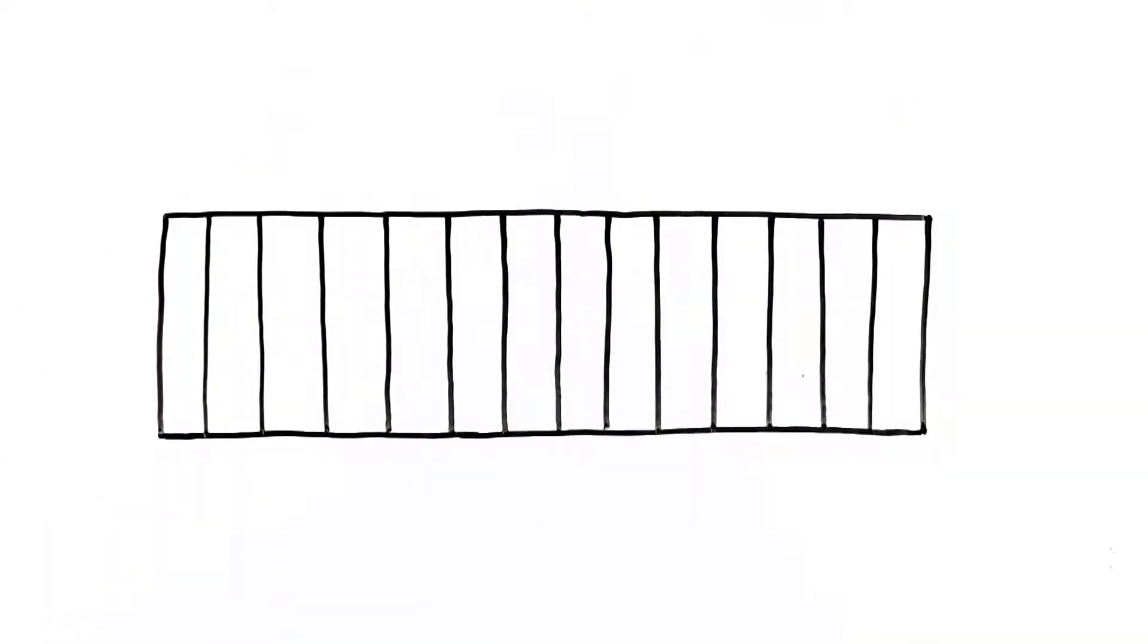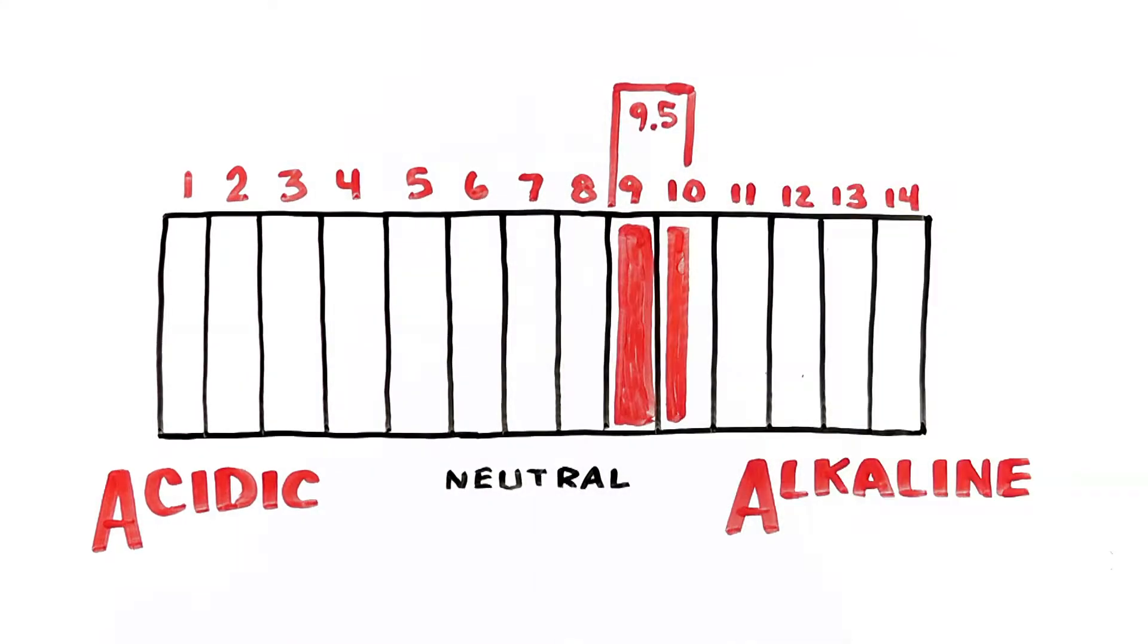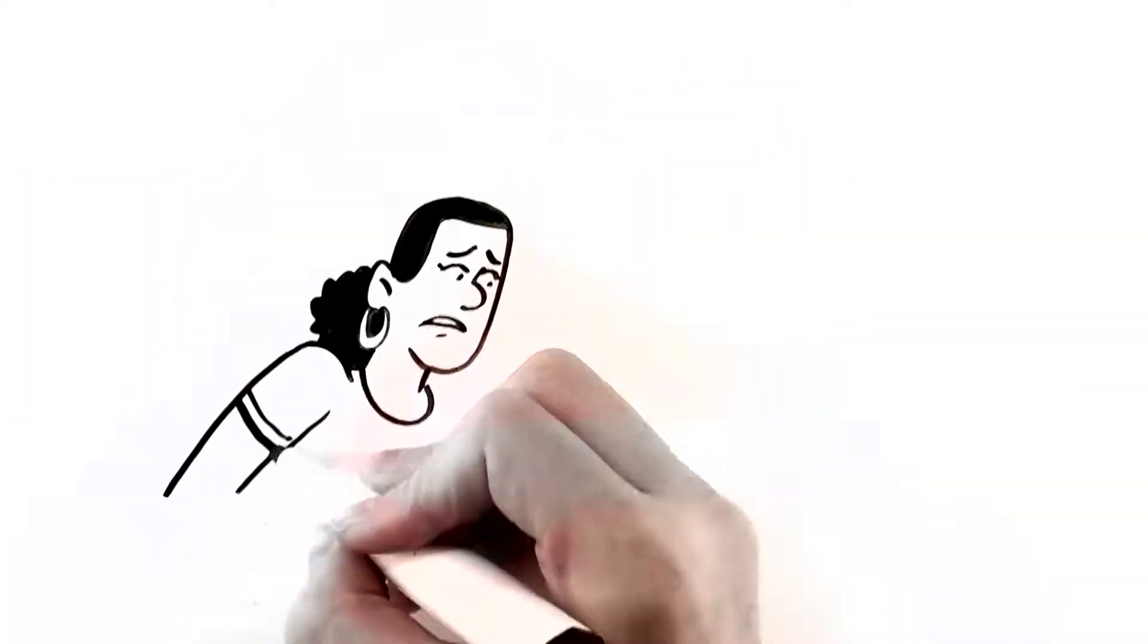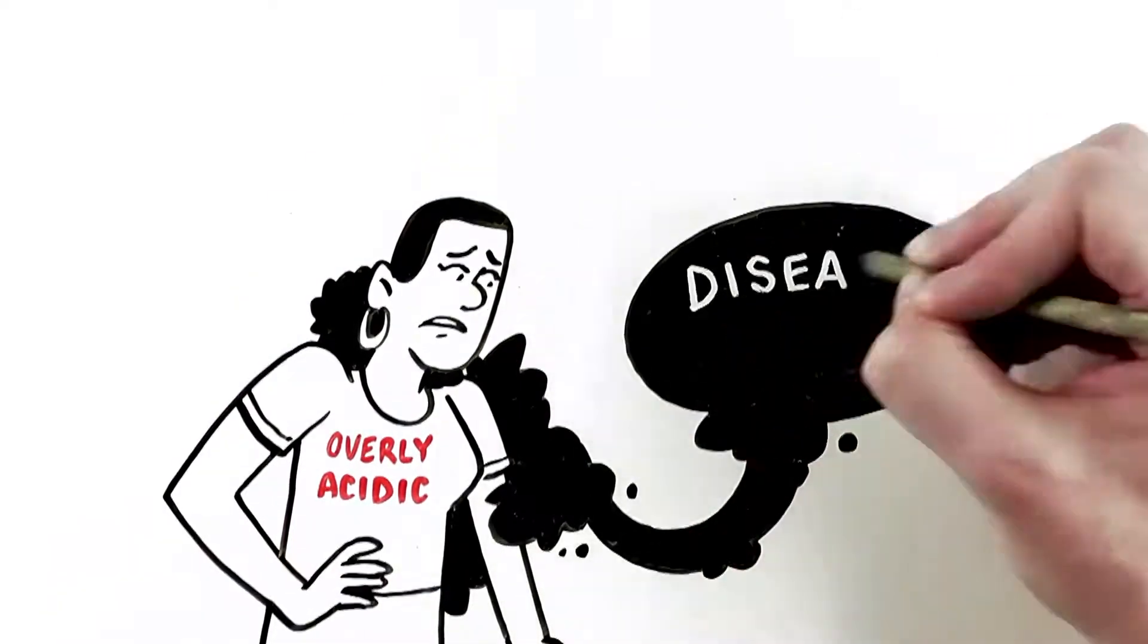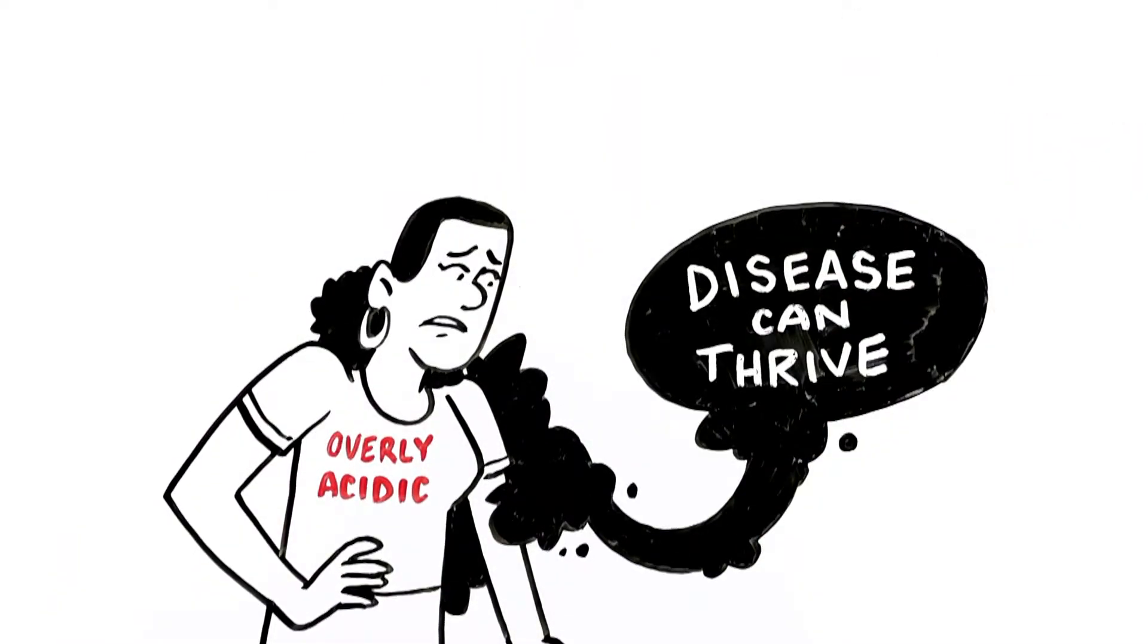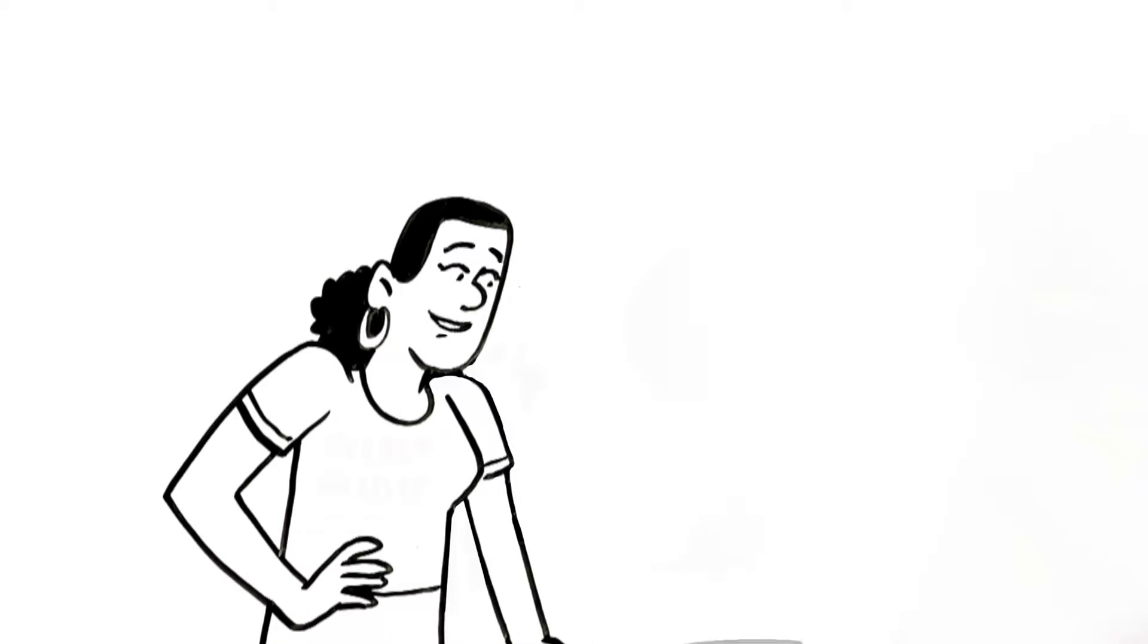The KanGen also turns the water alkaline. You can set it up to 9.5 on the pH scale. That's important because if your body is overly acidic, disease can thrive. And alkaline water flushes out the acidic waste you're building up.